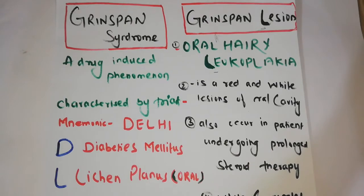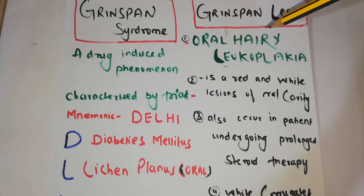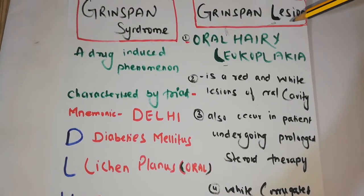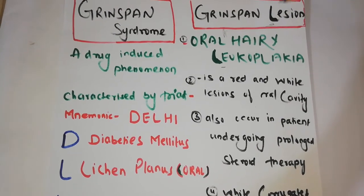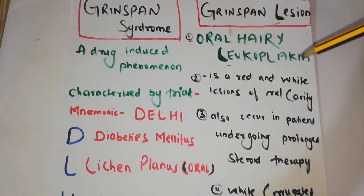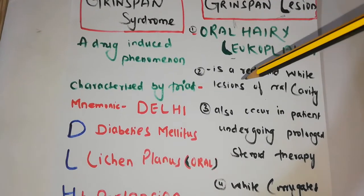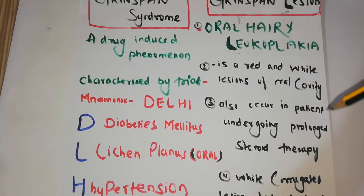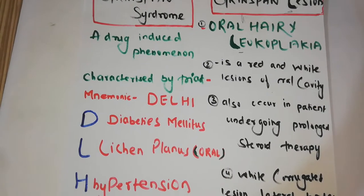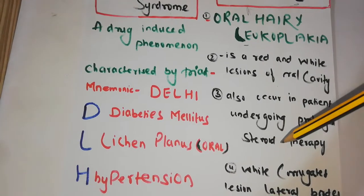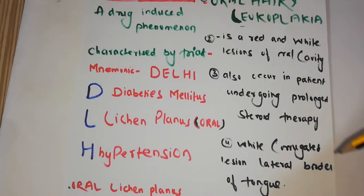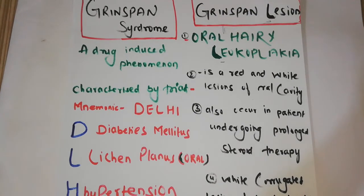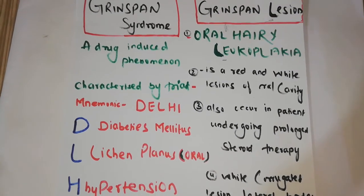Grinspan lesion — L for lesion, L for leukoplakia. A lesion is an injury, wound, or disease. The main feature is oral hairy leukoplakia, which is a red and white lesion of the oral cavity. It also occurs in patients undergoing prolonged steroid therapy. The key finding is a white corrugated lesion on the lateral border of the tongue.